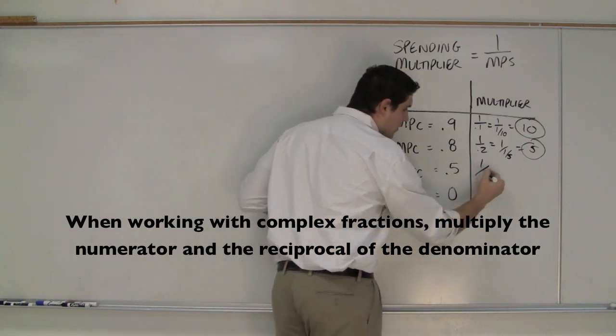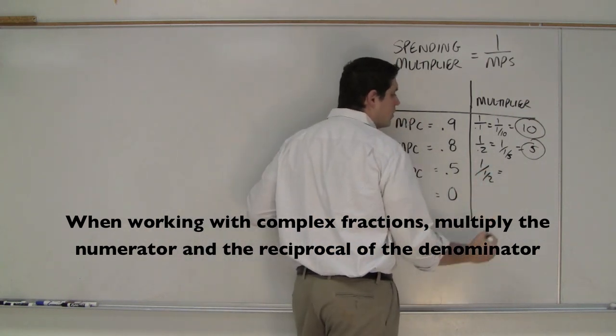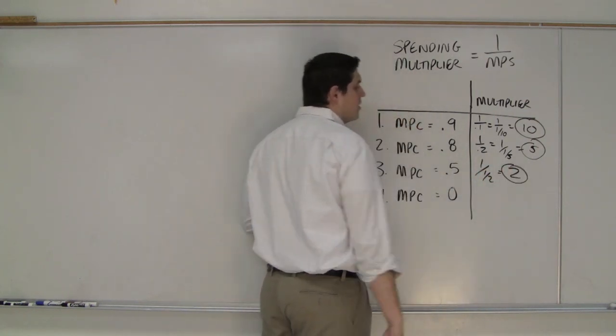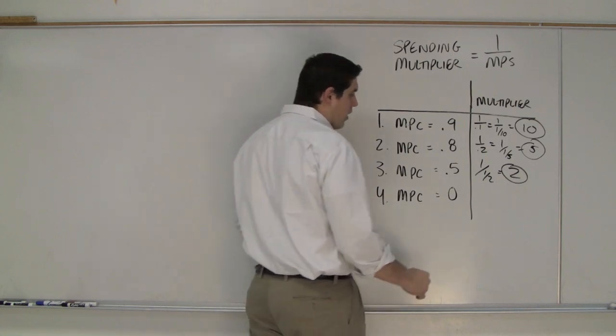For the next one, it's 1 over 1 half, which is equal to 2. That's the multiplier.